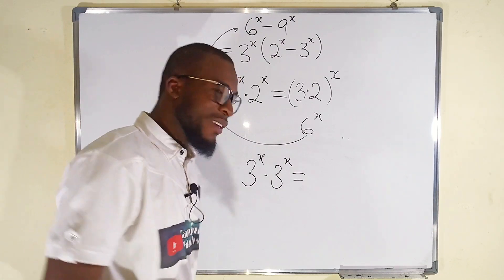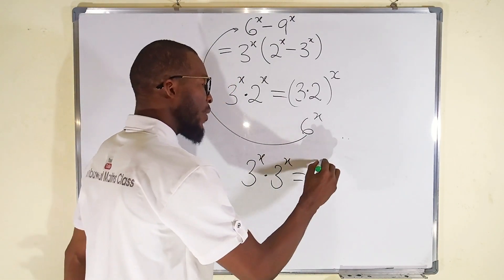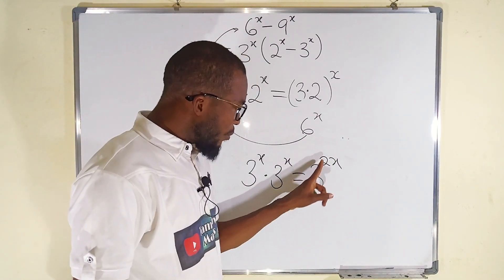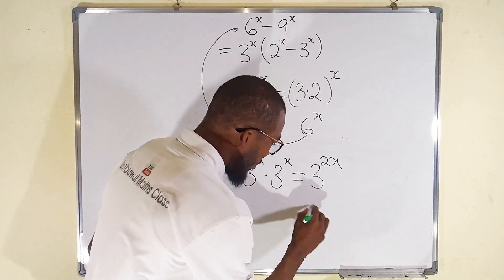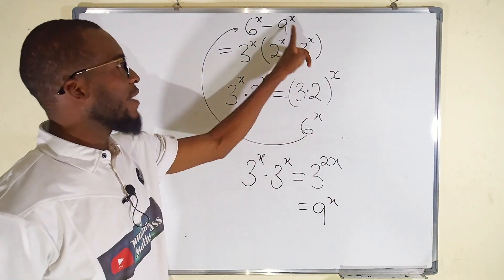If we say 3^x multiplied by 3^x, using laws of indices, we can take one base and add the powers. This is the same as 3^(2x), and since 3^2 is 9, this equals 9^x. Can you see that? They are exactly the same.